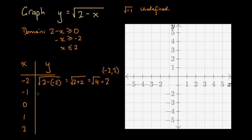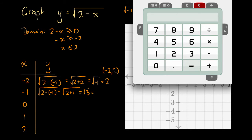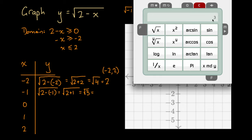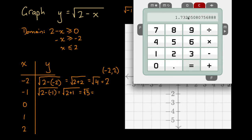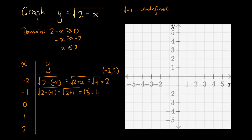For x = -1, we get y = √(2 minus negative 1). Again, a negative and a negative makes a positive, so this becomes √(2 + 1) = √3. I can't do that in my head, so let's use a calculator. We press 3 and then the square root button, and we get 1.7320... Rounding to one decimal place, that's 1.7. So the point is (-1, 1.7).